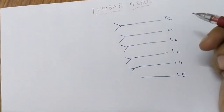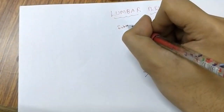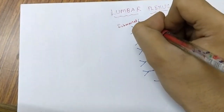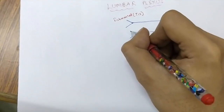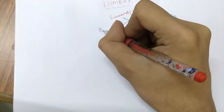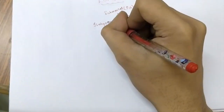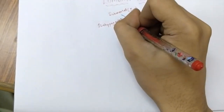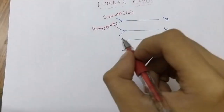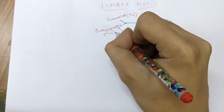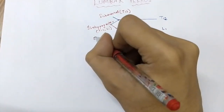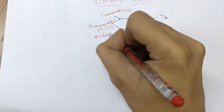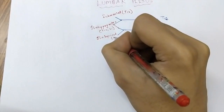The upper part of T12 comes under subcostal. T12 is subcostal. Then joining these two together forms the iliohypogastric — that is T12 and L1. Next, L1 — this is ilioinguinal.